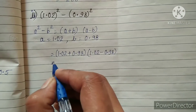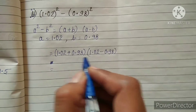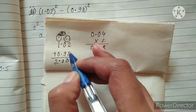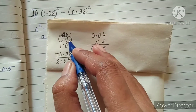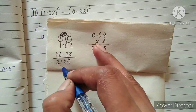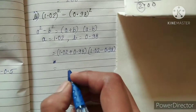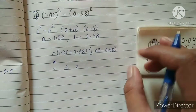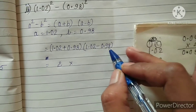Adding 1.02 and 0.98: 2 plus 8 is 10, write 0 carry 1; 9 plus 1 is 10, write 0 carry 1; 1 plus 1 is 2. Before the decimal we have only the value 2, so we write 2, multiplied by 1.02 minus 0.98.